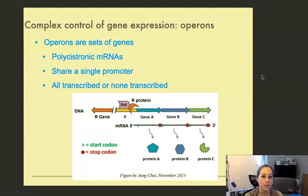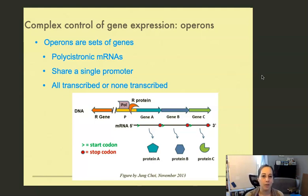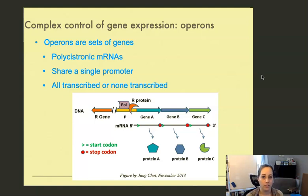However, on the mRNA, as we discussed previously, each of the genes has a ribosome binding site and its own start site, as well as a stop codon. In terms of the actual transcription event, all of these genes are transcribed or none of them are transcribed, and that goes to reason because they share a promoter.